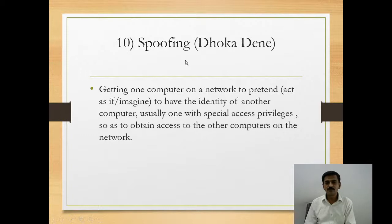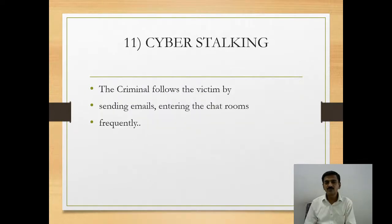This is an example of a phishing email. The next type of cybercrime is spoofing — getting one computer on a network to pretend to have the identity of another computer, to access information on another system without informing or giving knowledge to the actual user.